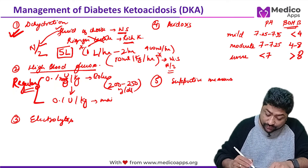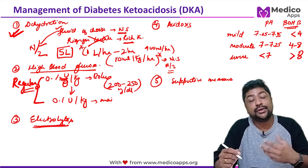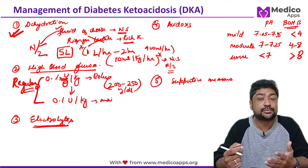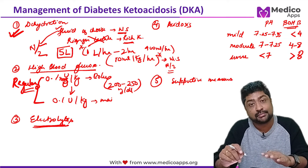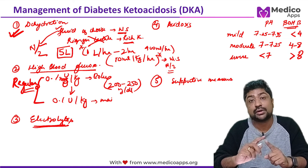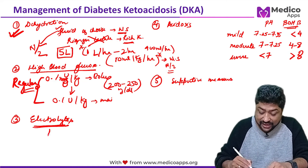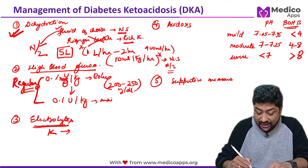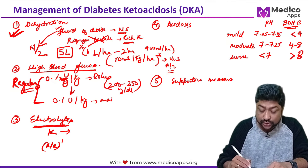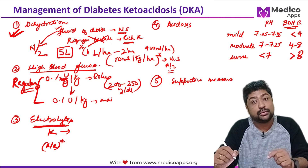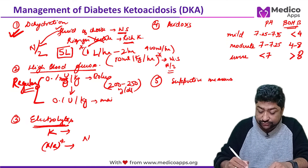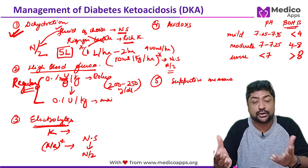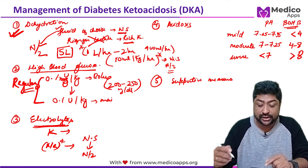Regarding electrolytes: potassium may be high initially but will fall as the patient is managed with insulin, requiring supplementation. Sodium may be low initially but rises with correction, requiring a shift from normal saline to N/2 based on monitoring.